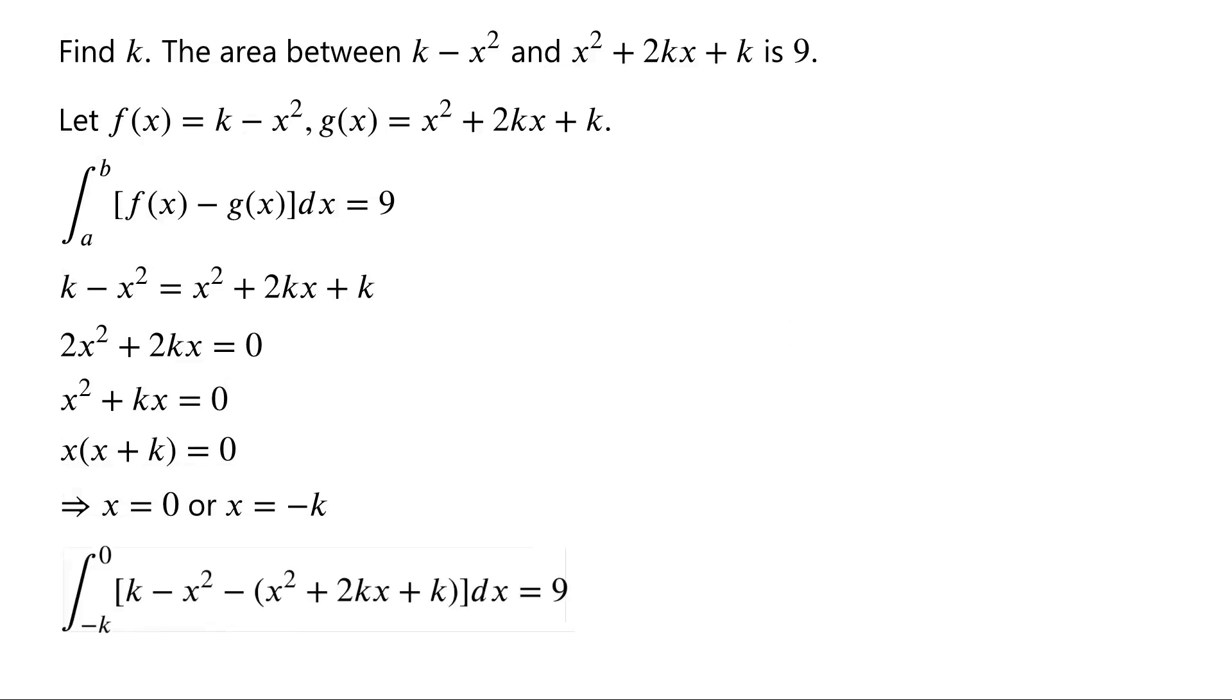We have the integral of k minus x squared minus x squared plus 2kx plus k dx from negative k to 0 equals 9. The integrand can be simplified to negative 2x squared minus 2kx. The integral of x squared is equal to 1 third times x cubed plus a constant, and the integral of x is equal to a half times x squared plus a constant.